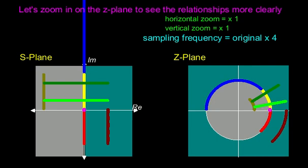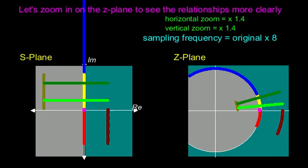We'll need to zoom in around the DC point and the Z plane to see what's happening more clearly, with a greater vertical zoom near the end.